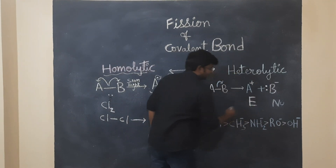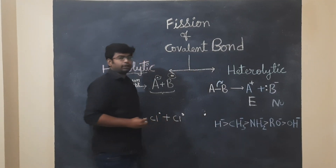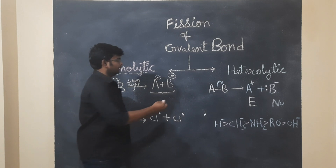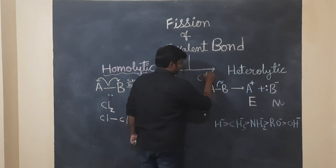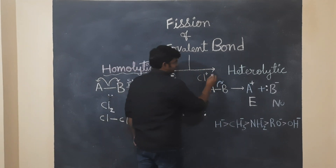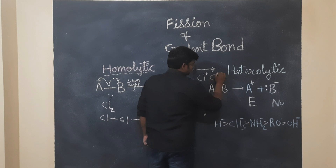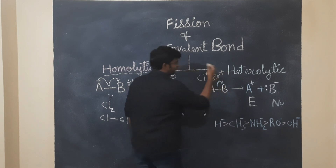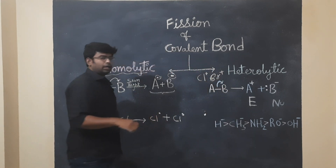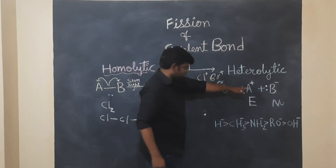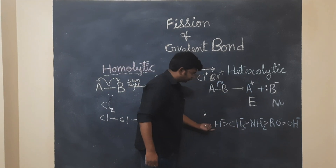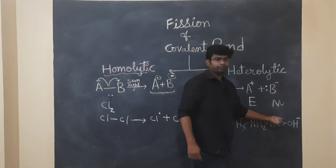So if we have two types of electrophile, Cl is positive — it is a positive, electron-deficient compound. And the other part is also positive. So if we have the nucleophile, we have negative compounds. That is negative.